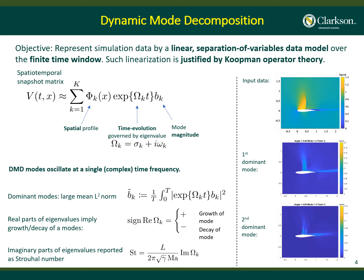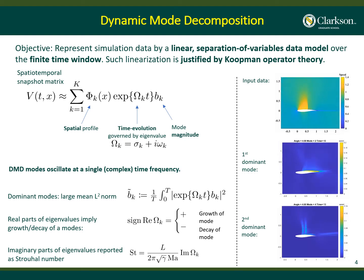The mode magnitude is growing if the eigenvalue real part is positive, and the mode is decaying if the eigenvalue real part is negative. We can calculate the Strouhal number using the imaginary part of the eigenvalue, which we call St. Now let's discuss a simple example.